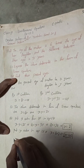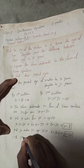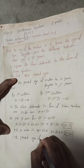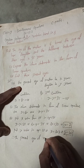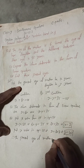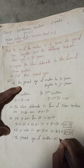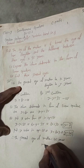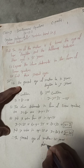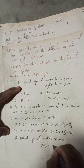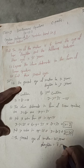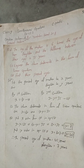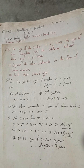Therefore, the present age of mother is equal to 42 years, and the present age of daughter is equal to 7 years. This is the required solution.